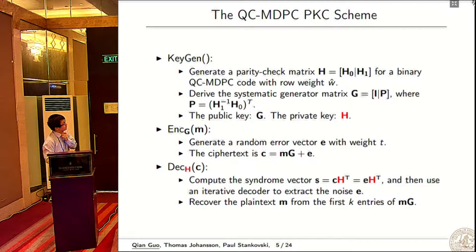The weight always scales on the order of square root of N log N. QC-MDPC is just a quasi-cyclic MDPC code. This is the QC-MDPC PKC scheme. For key generation, we choose to generate a parity-check matrix H. This H is a sparse matrix, and we derive the systematic generator matrix G. Here P is a dense matrix.